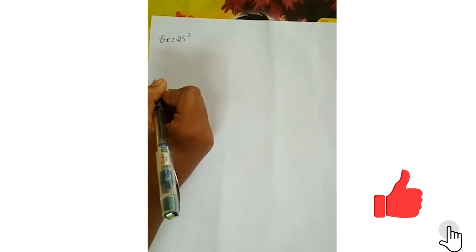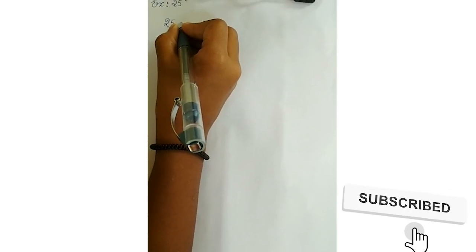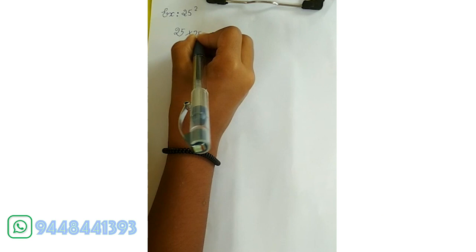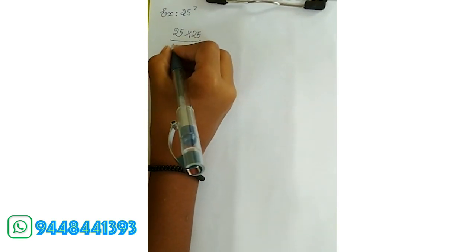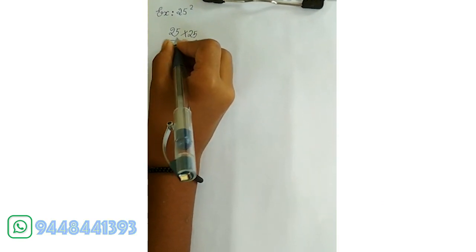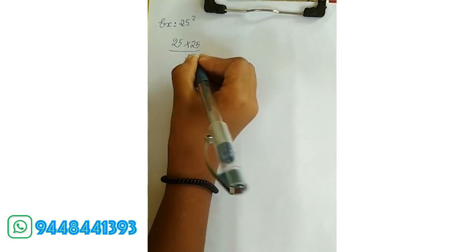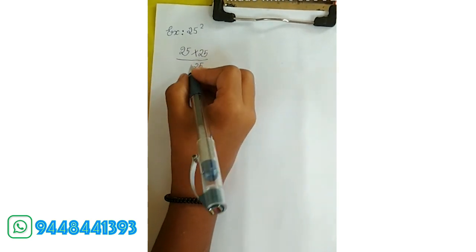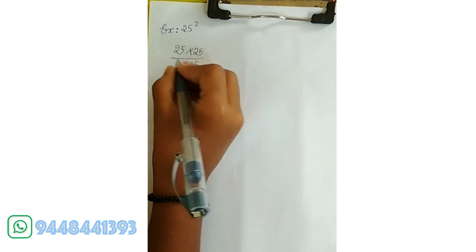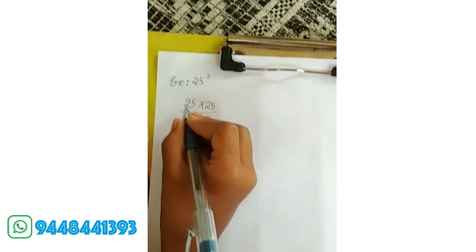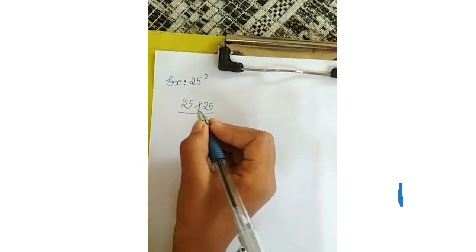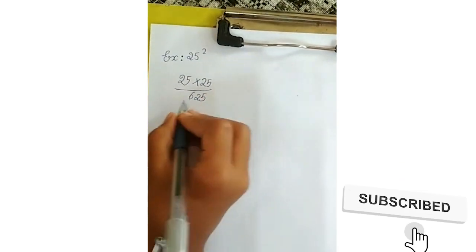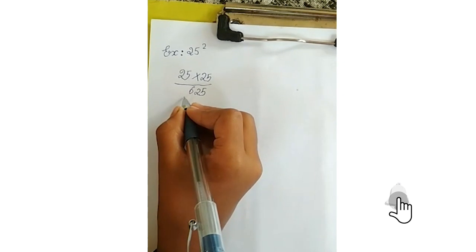Example: 25 square. 25 square means 25 into 25. First, multiply 5 into 5, that is 25. So, always write 25 at the end. After that, the first digit is 2. The next number of 2 is 3. So, multiply 2 into 3, that is 6. Add 6 at the beginning and the answer is 625.